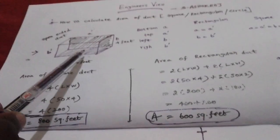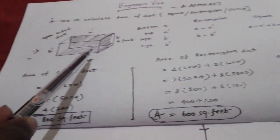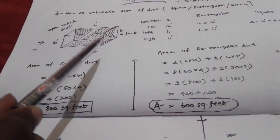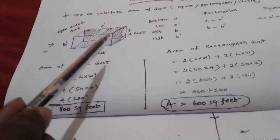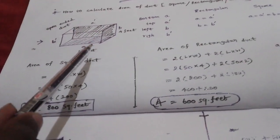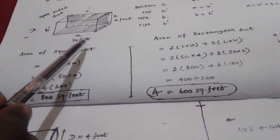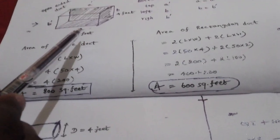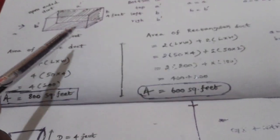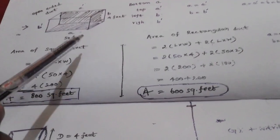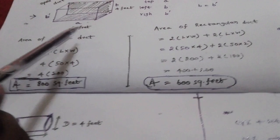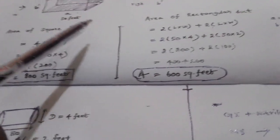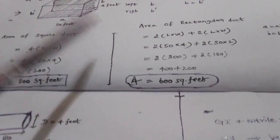For other duct shapes such as the offset, reducer, and transition, it is a different formula. We will cover those in the next video.